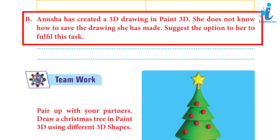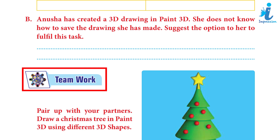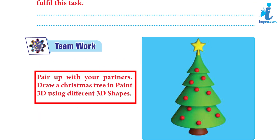Critical thinking B: Anushka has created a 3D drawing in Paint 3D. She does not know how to save the drawing she has made. Suggest the option to her to fulfill the task. Answer — Steps to save a drawing in Paint 3D: Step 1: Click Expand Menu button. Step 2: Select the Save As option. Step 3: Type a name for your project. Step 4: Click the Save option. Teamwork: pair up with your partners and draw a Christmas Tree in Paint 3D using different 3D shapes. Answer: Do it yourself.